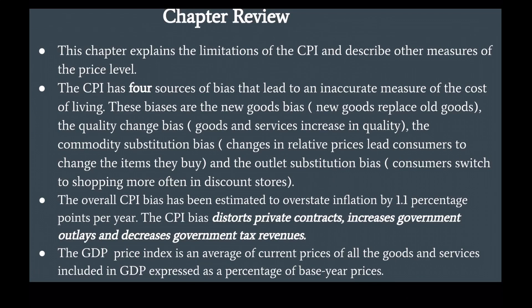Chapter Review. This chapter explains the limitations of the CPI and describes other measures of the price level. The CPI has four sources of bias that lead to an inaccurate measure of the cost of living.